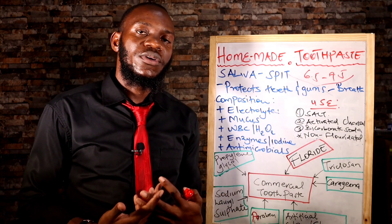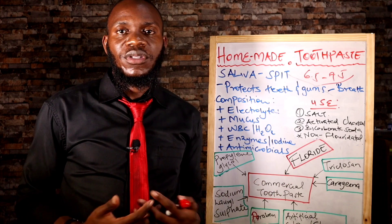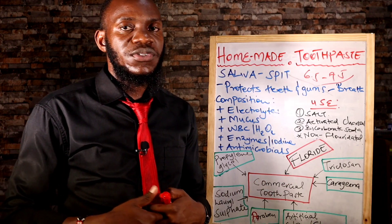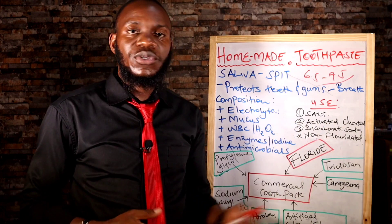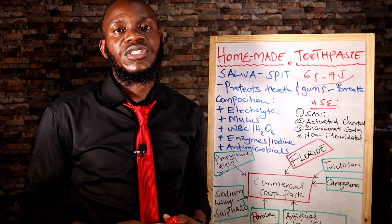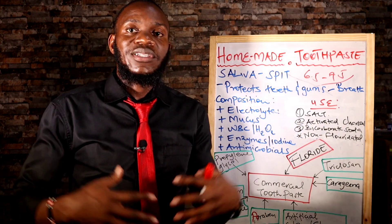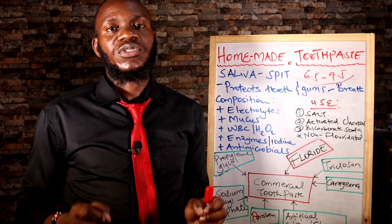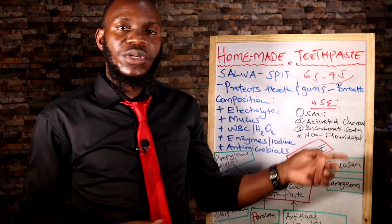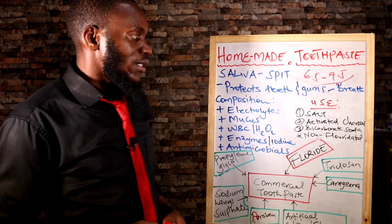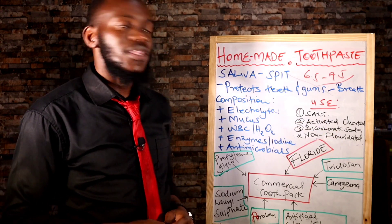Number two is activated charcoal. You can use activated charcoal — it's sold everywhere, available in pharmacies. Activated charcoal can be used to whiten your teeth, and it has no side effects and no reaction to your saliva. Number three on the list is bicarbonate soda. We all know this — it's a very good compound for your teeth.